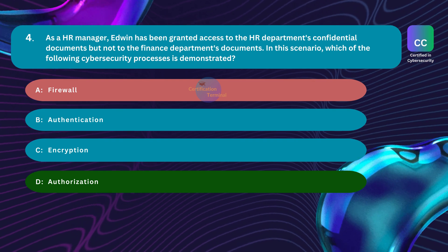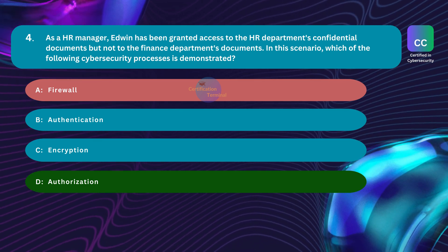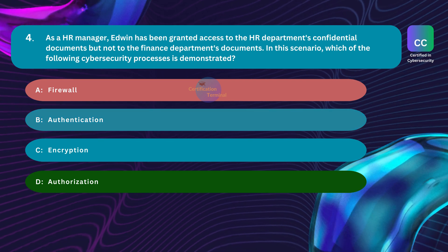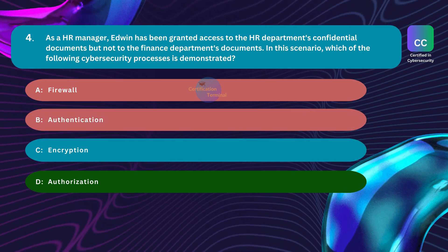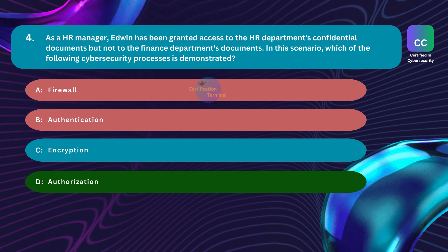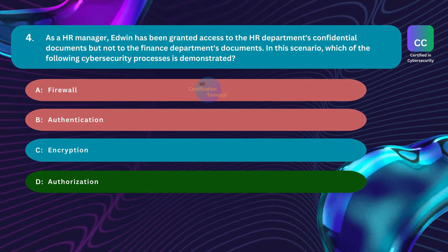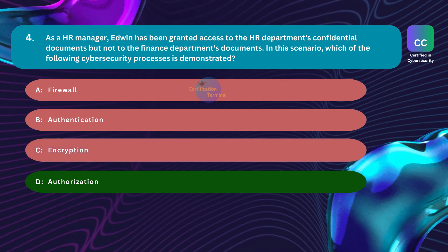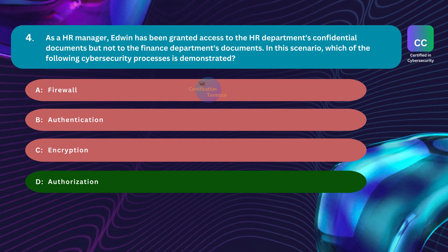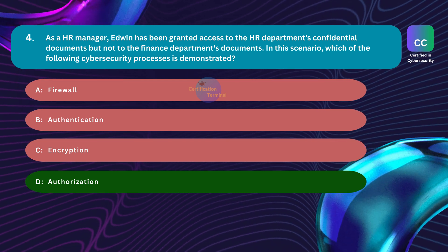Option A, firewall, is incorrect — a firewall is a network security device that monitors and controls incoming and outgoing network traffic based on predetermined security rules; it is not directly related to granting access to specific documents. Option B, authentication, is incorrect — authentication verifies the identity of a user, system, or device, but doesn't specifically address granular permissions for specific documents across departments. Option C, encryption, is incorrect — encryption converts data into a secure format to prevent unauthorized access, but does not determine who is authorized to access specific documents.